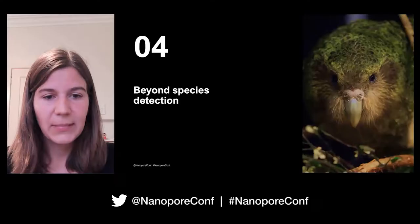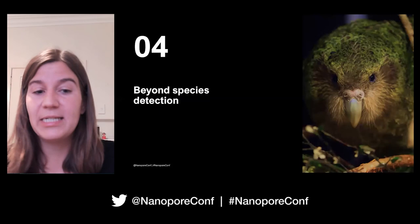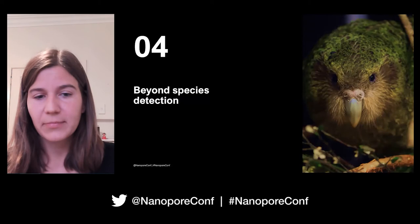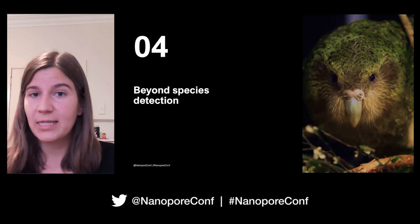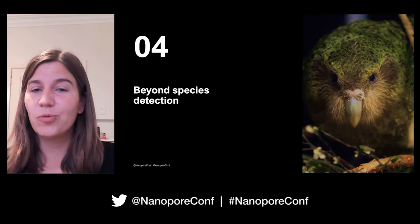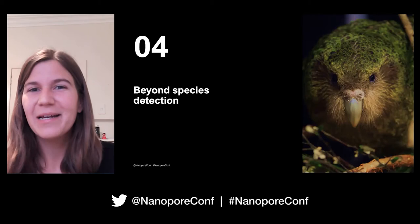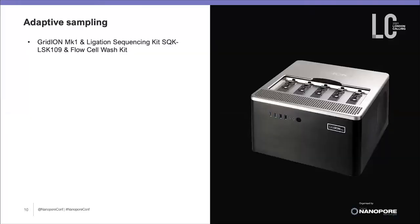I wanted to take this eDNA step one step further and go beyond species detection — to try individual identification based on DNA extracted from soil samples. For that, I would have to go beyond sequencing a ribosomal gene and see if I can get as much DNA as possible, ideally data from the entire genome.